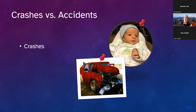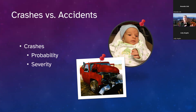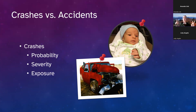When it comes to crashes on roads, streets, and highways — even trails — we care about three things: probability, severity, and exposure. We want to put money where crashes are more likely to occur. We really want to focus on high-severity crashes — those that lead to fatalities and serious long-term injuries, labeled KIA in statistics. That's where we get the most bang for the buck.